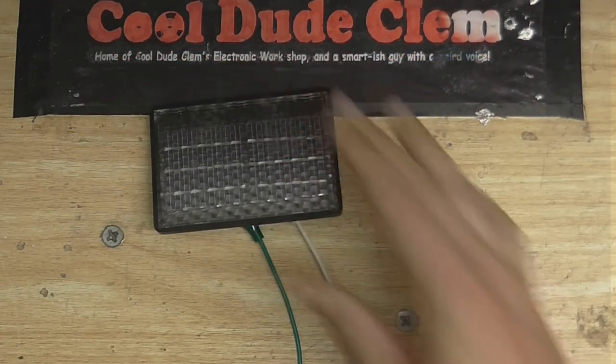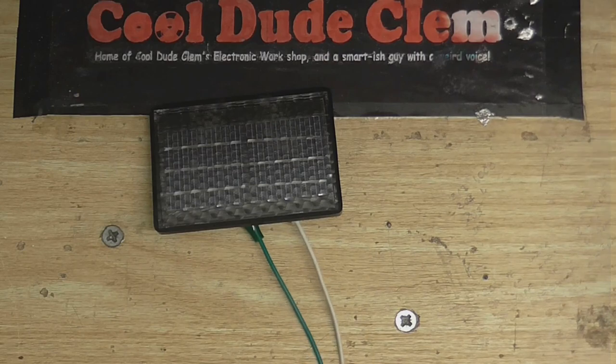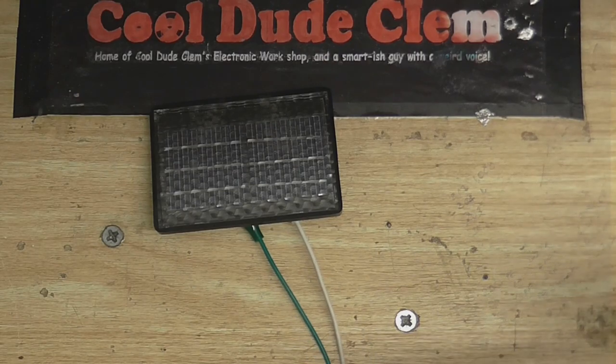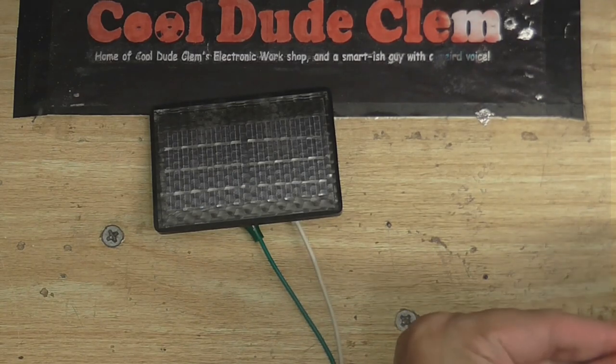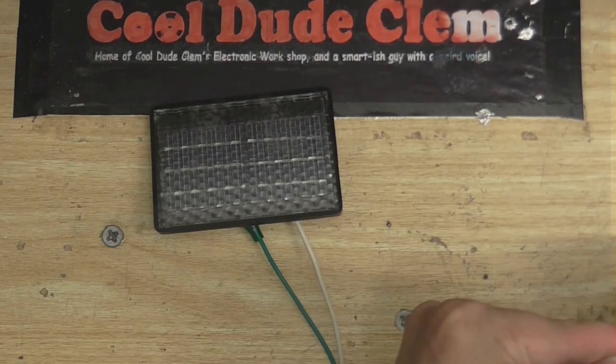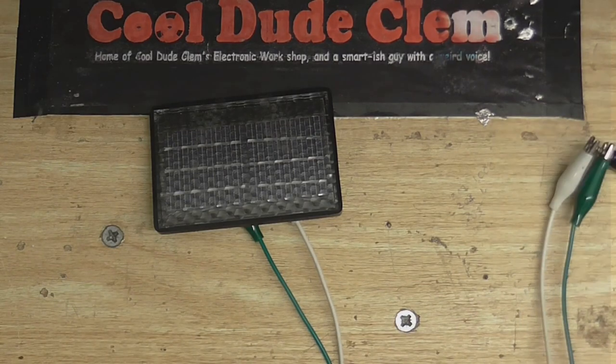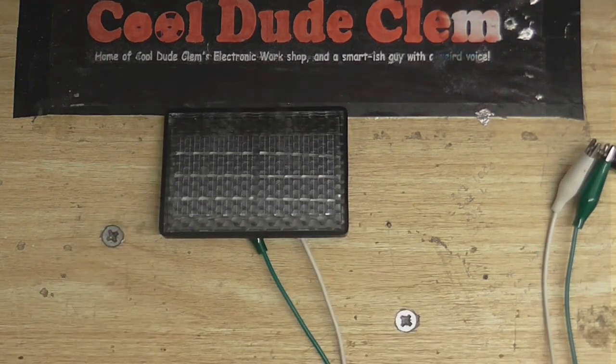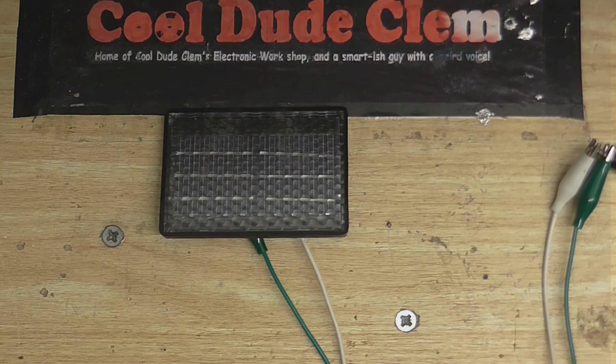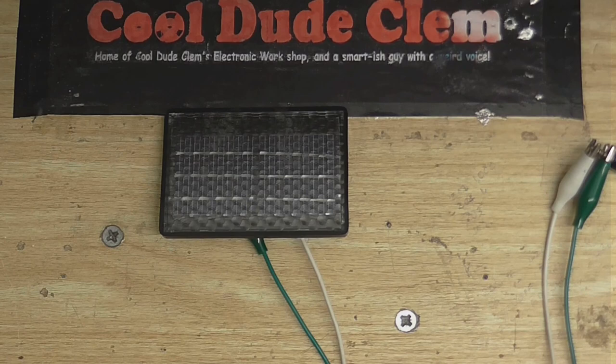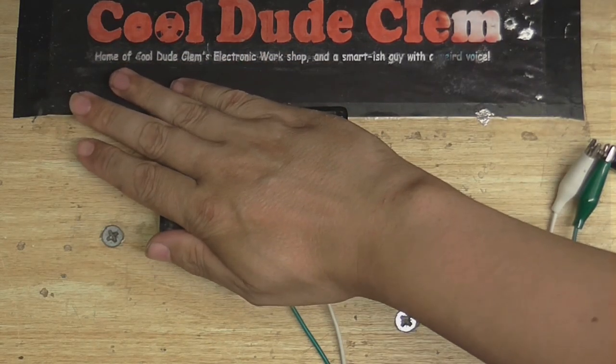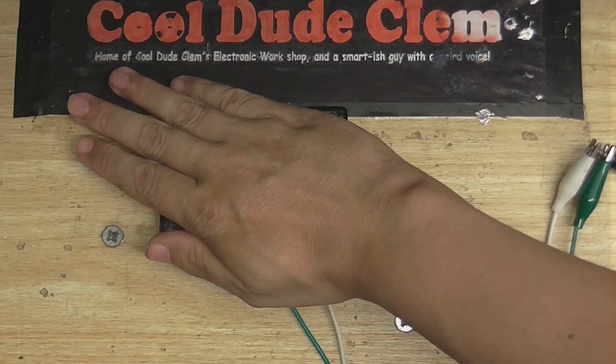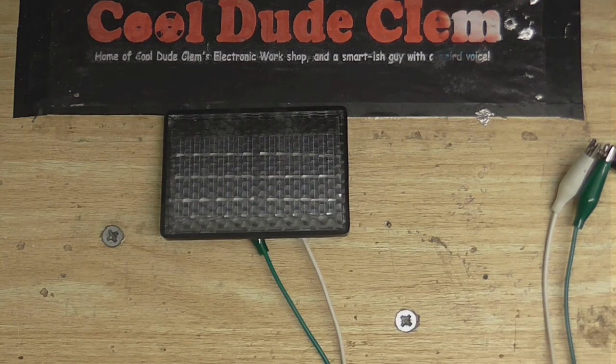I have a solar cell, and I'm going to connect that up to my amplifier, and let's have a listen to what we get. You hear that? That's the light coming into the solar cell, and then being fed into the amplifier. If I cover the solar cell, you can hear it goes away. Uncover the solar cell, and it comes back.